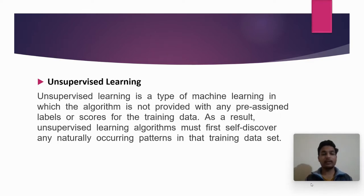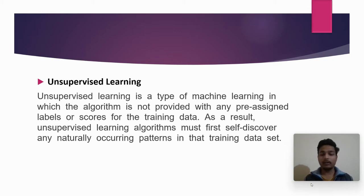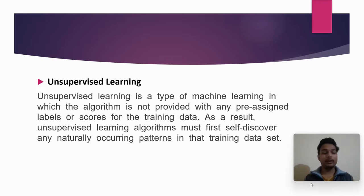Unsupervised learning is a type of machine learning in which the algorithm is not provided with any pre-assigned labels or scores for the training data. As a result, unsupervised learning algorithms must first self-discover any naturally occurring patterns in that training data set.